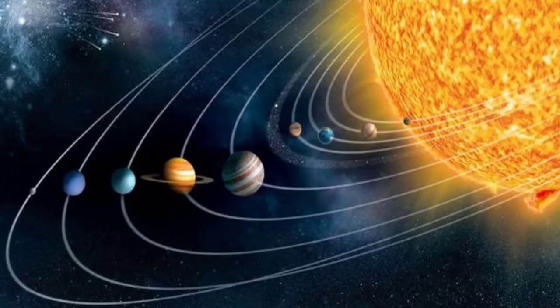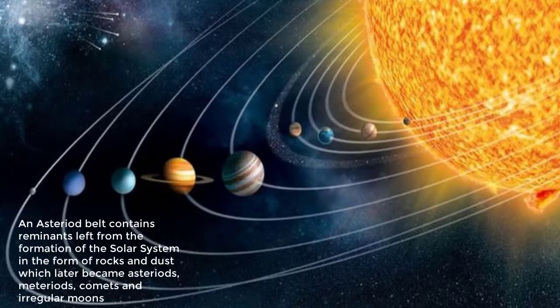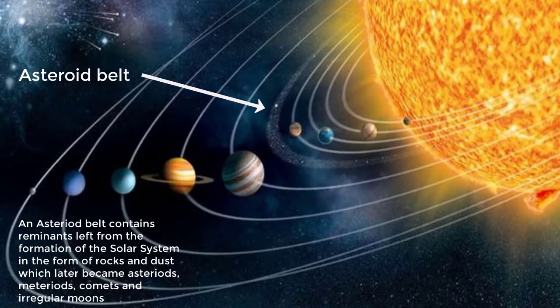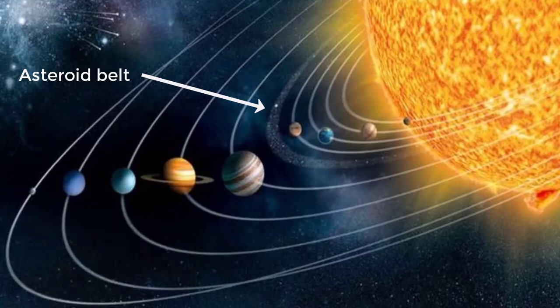In cases where planets were not created, remnants left from the formation of the solar system created an asteroid belt. This asteroid belt contains leftover pieces of rocks that later became asteroids, meteoroids, comets and irregular moons.